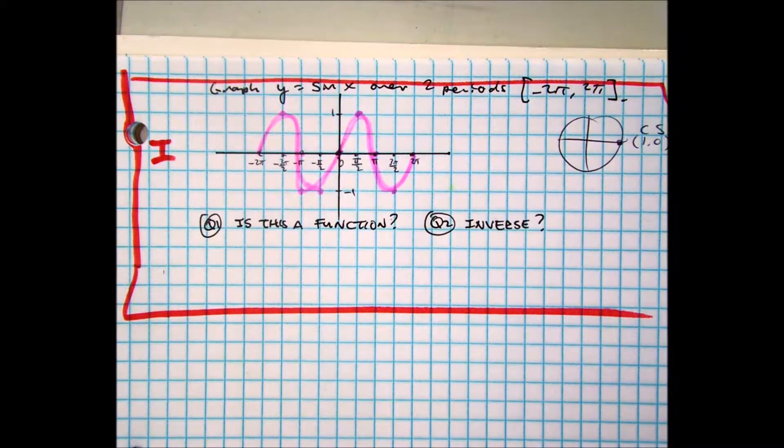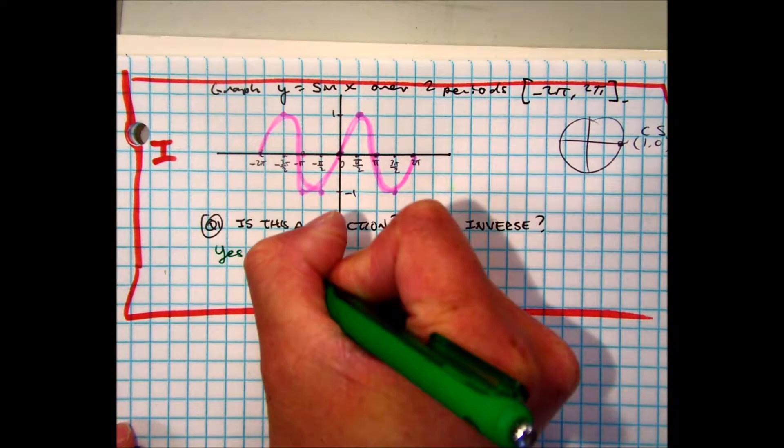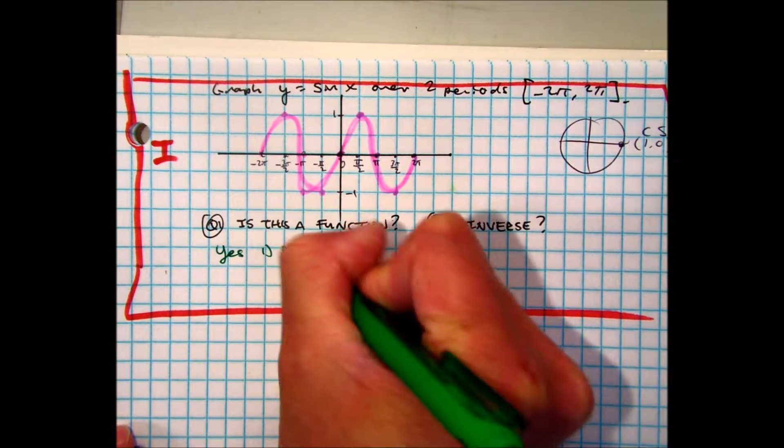Jocelyn, is this a function? Yes. Why? Because it passes a vertical line test. Anything else?